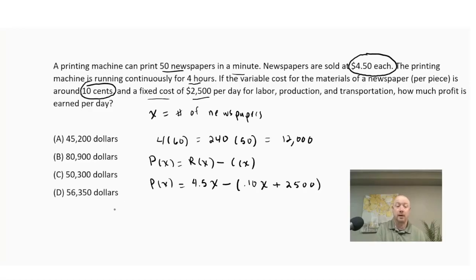So now what I'm going to do is take my profit function and plug in my 12,000. So P(12,000) is going to equal 4.5 times 12,000, that'll give you my revenue, minus 0.10 times 12,000 plus 2,500. We should be able to use our on-screen calculator to make this calculation. And if we do this correctly, we should get C, $50,300.